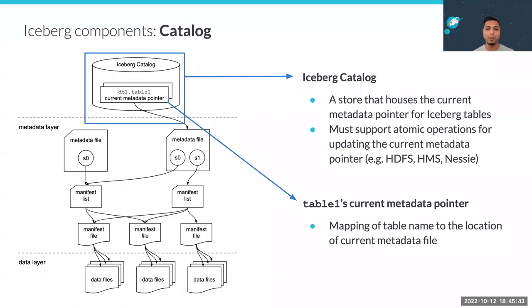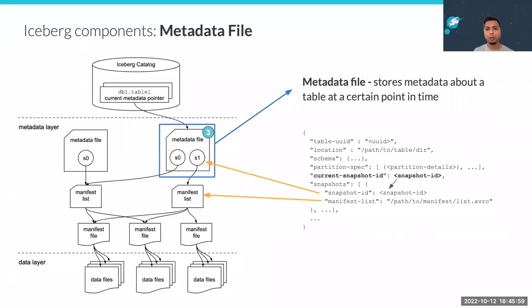The catalog must support atomic operations to update the pointer to the current metadata. Common catalog implementations include HDFS, the Hive Metastore, AWS Glue, JDBC, and the newer REST API catalog. The catalog essentially maps a table name to the location of the current metadata file — you need to know where that file is to open it and perform operations.